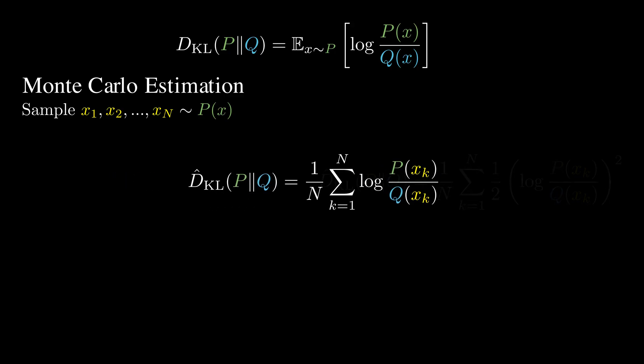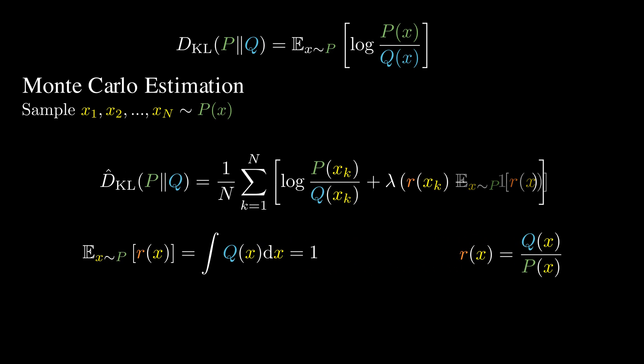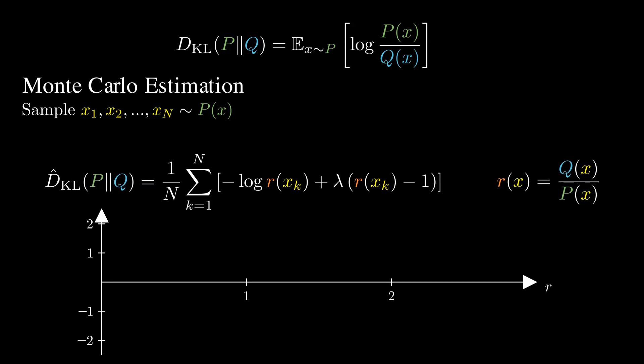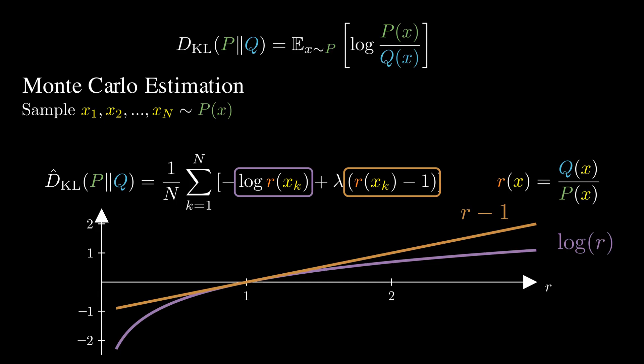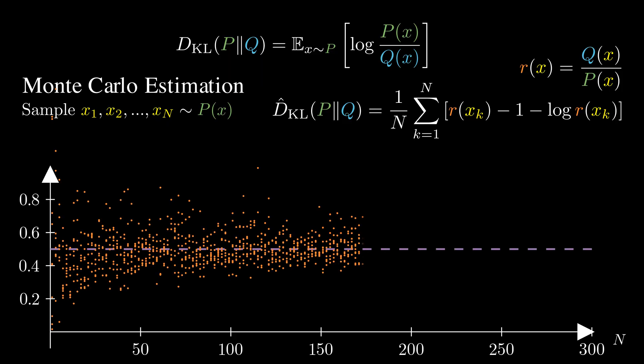We start with this simple unbiased estimator. The idea is to add a correction term with 0 expected value. This technique is known as control variate. We define the function R as Q(x) divided by P(x). With this choice, we can show that the expectation of R(x) under the distribution P is just 1. But now how do we pick the value of lambda? Let's simplify the equation a bit using the function R(x). To understand this visually, let's look at two curves. Here is the curve of log R, and here is the line of R-1. We see that the R-1 is the tangent line to the curve log R at R equal to 1. And more importantly, it's always above the curve log R. This means that if we set lambda as 1, we ensure our estimator remains non-negative and achieves lower variance. Let's try it. Yes, this estimator gives us an unbiased estimate of the true KL divergence while having a lower variance. How cool is that?